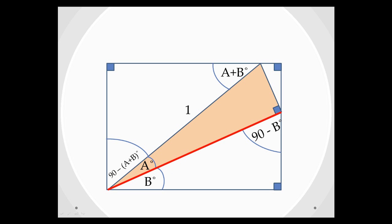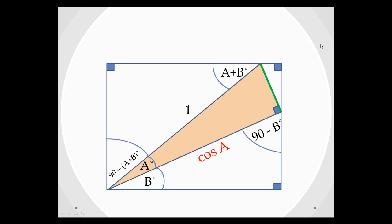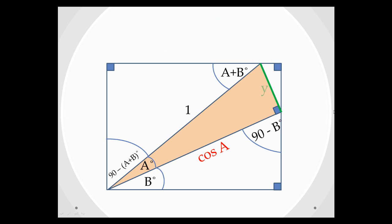If we name this side here x, then focusing on the shaded triangle, we can see that cos A is going to be the adjacent over the hypotenuse, or x over 1. Rearranging that gives us that x is just cos A. If we now focus on this side here, shaded green, and we call it y, we can say that sin A is opposite over hypotenuse, so y over 1. Rearranging, we find that y is just sin A.